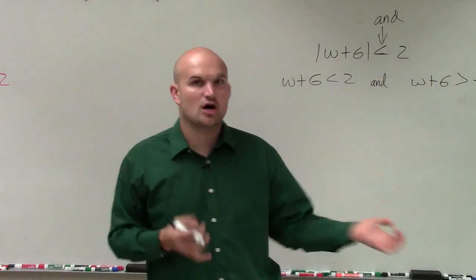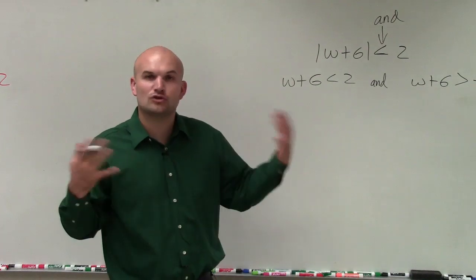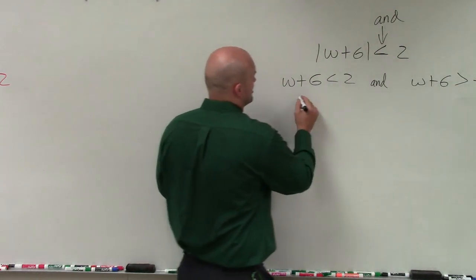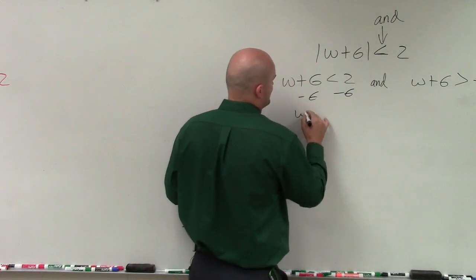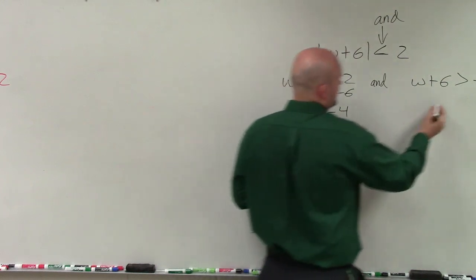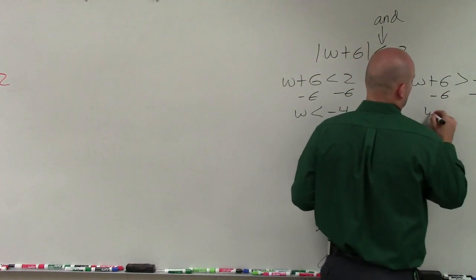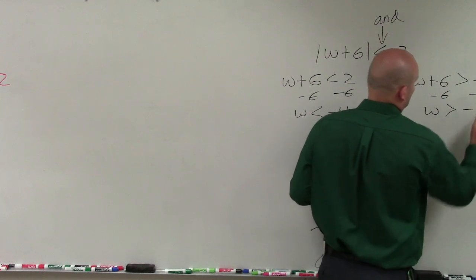So now what we're going to do is solve each inequality separately and then graph them together. So I'll subtract 6, and I have w is less than negative 4. And then here, I subtract 6, and I have w is greater than negative 8.